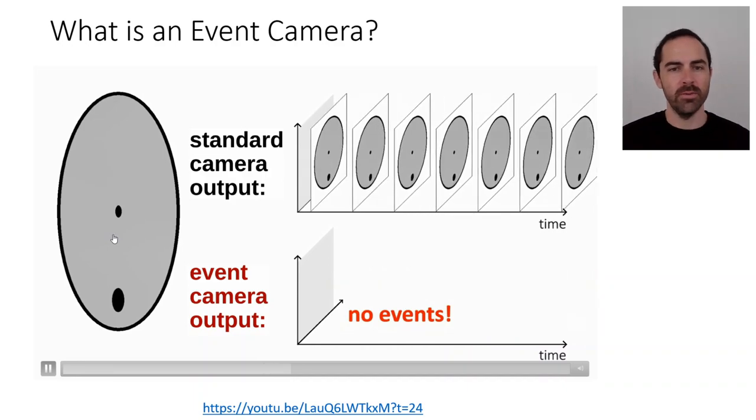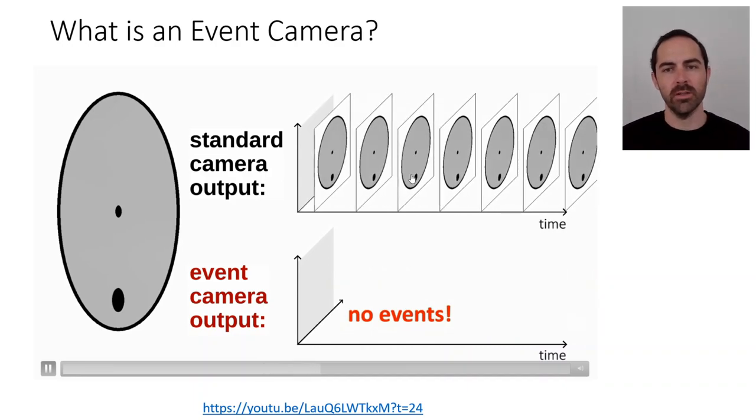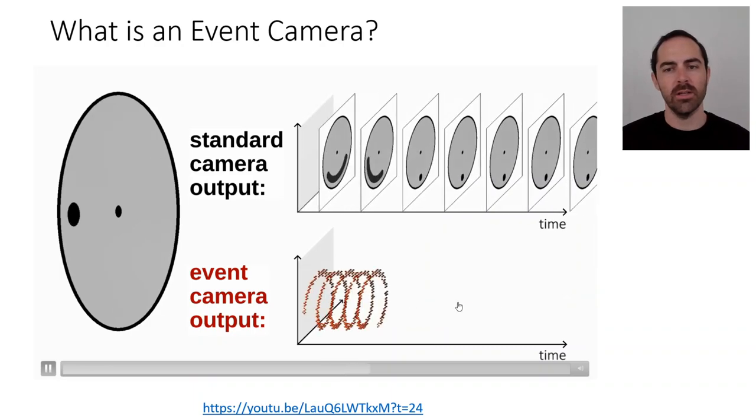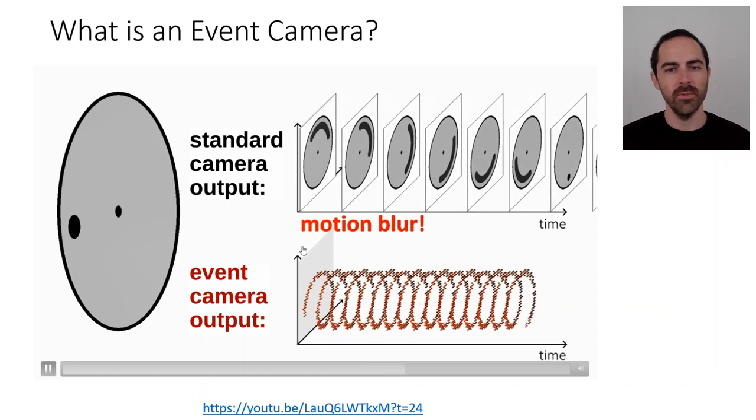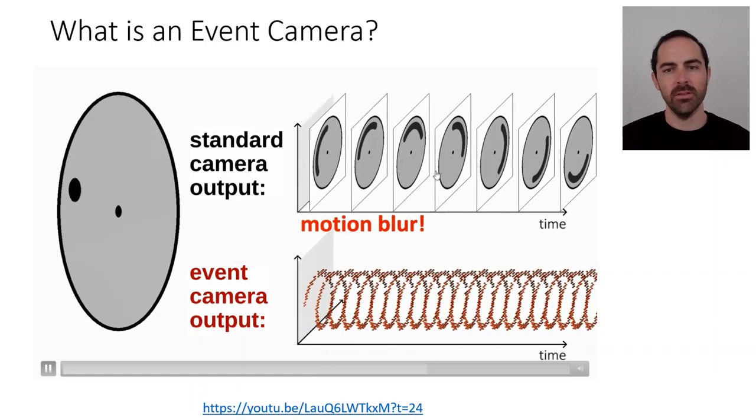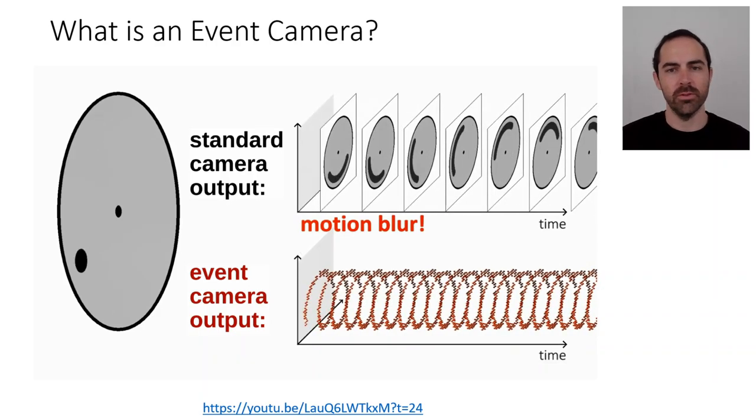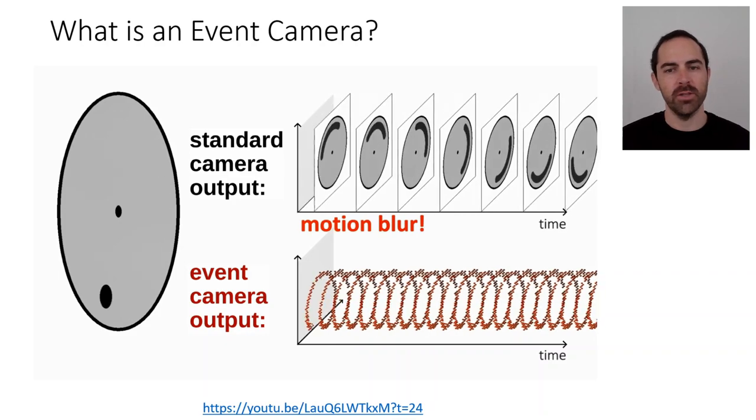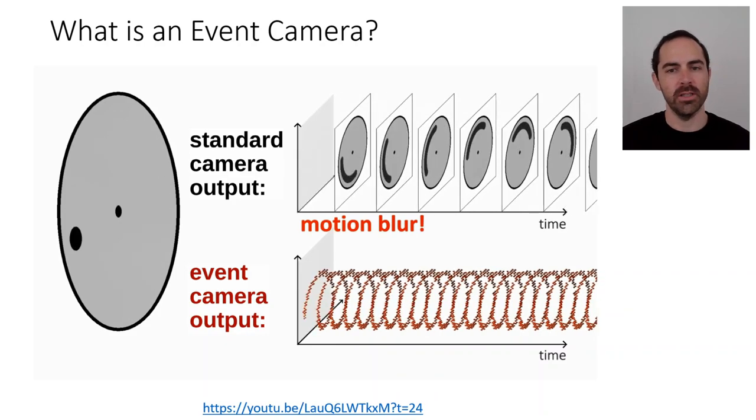If nothing moves in the scene, the standard camera wastefully acquires images that are redundant, whereas the event camera produces no events. And if we speed up the scene, the standard camera suffers from motion blur because it has limited speed, whereas the event-based camera is very fast and still able to acquire the high speed motion in the scene.